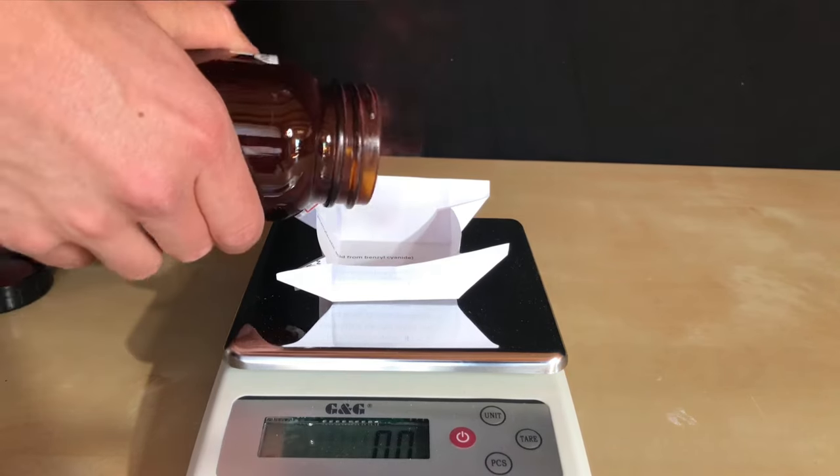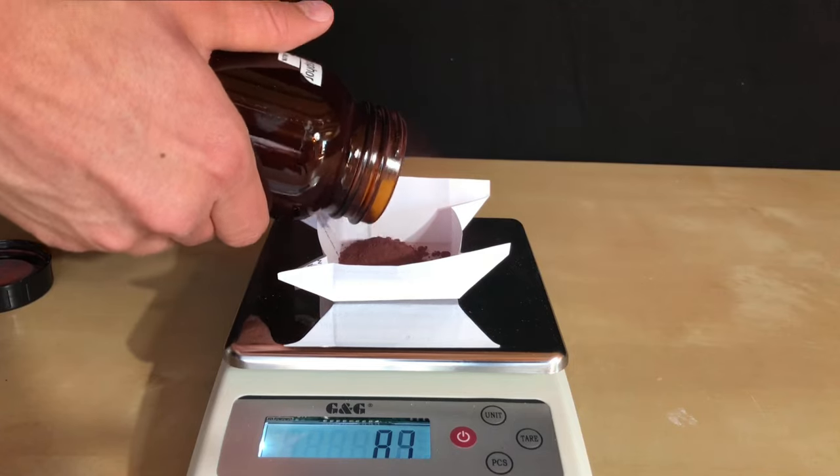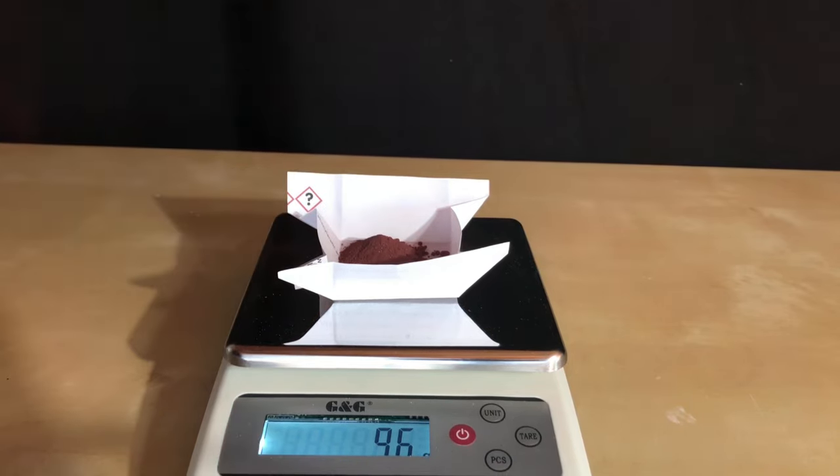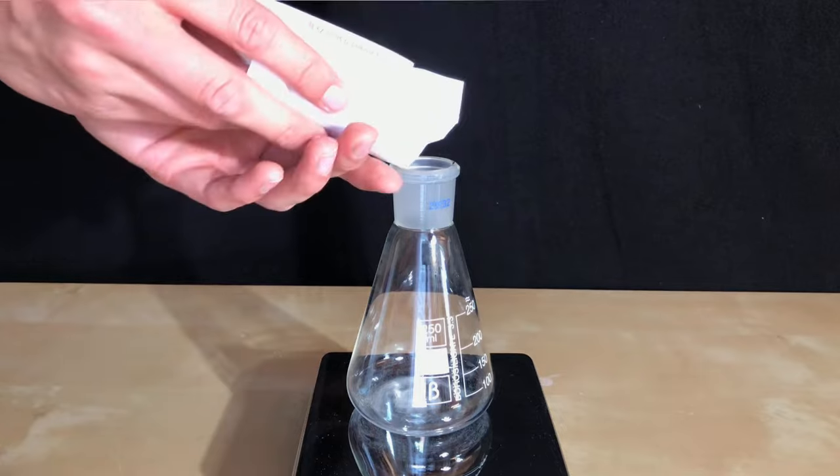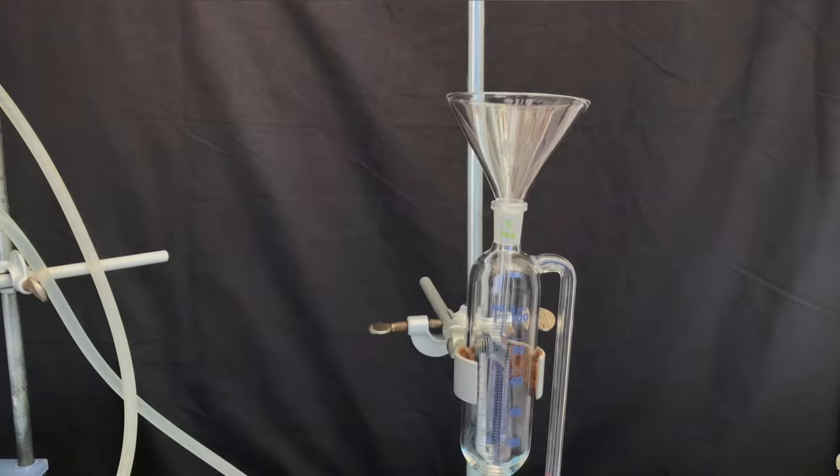We began by weighing out about 10 grams of red phosphorus. As we are using a huge excess anyways, the exact amount doesn't matter. All red phosphorus was added to a 250 milliliter Erlenmeyer flask. A smaller flask might have been a better choice.